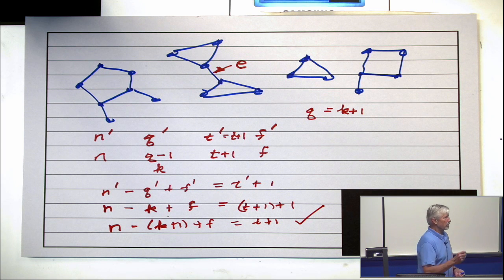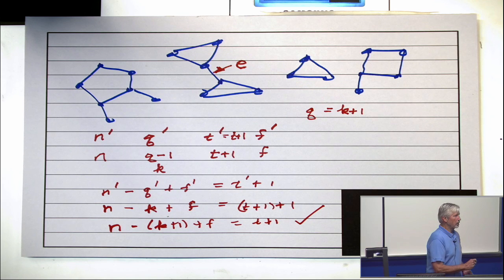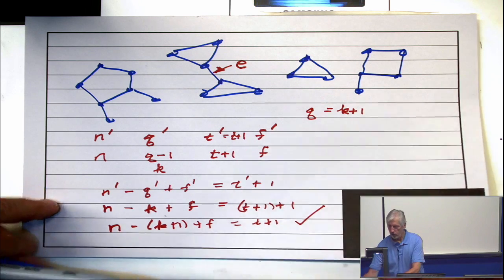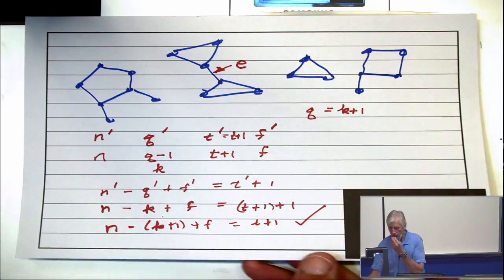So the point is, the inductive step is done if there is a bridge. Alright, so now we have to consider case 2, that there is no bridge.